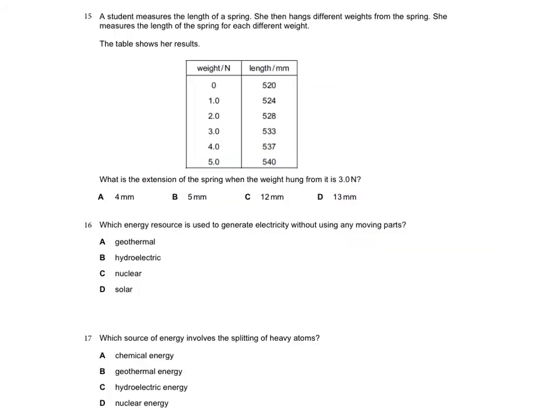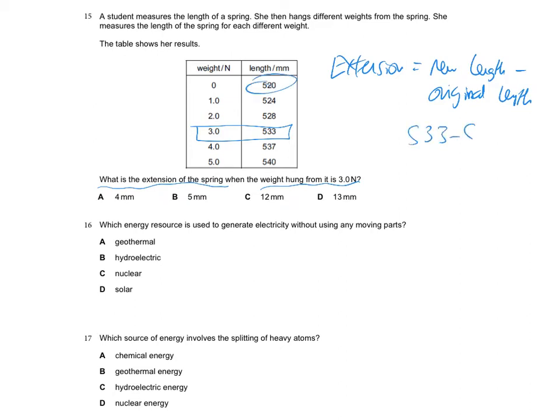Question 15 is a classic one related to Hooke's Law and Springs. This is actually even slightly easier. It's just asking for the extension of the spring when a weight hung is 3 newtons. So here's the 3 newtons. We just want to know how much is extended by. Remember the extension is just the new length minus the original length, the length when no force was on there. Okay, so in this case, if we do 533 minus the original length, which is 520, we'll get 13 millimetres.